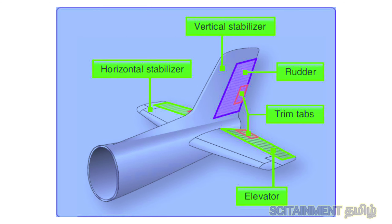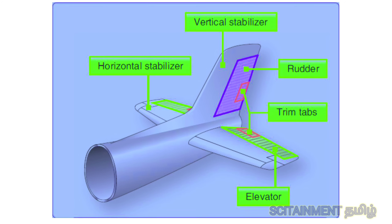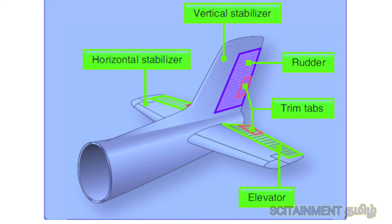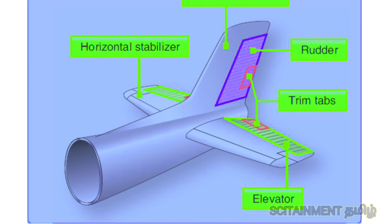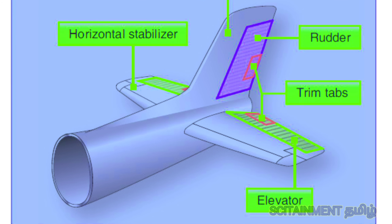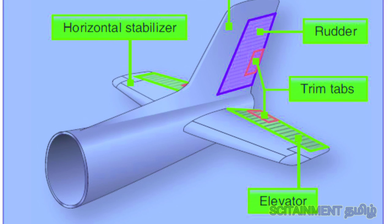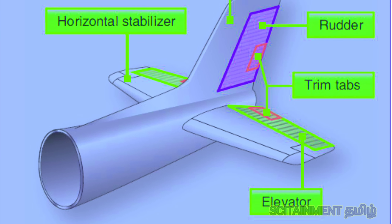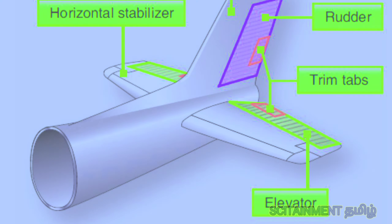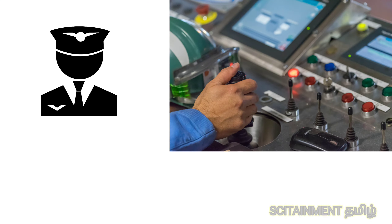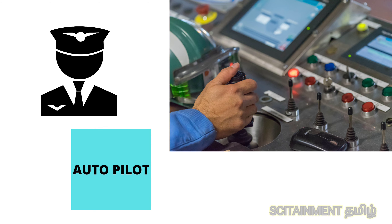If you look at the Elevator, the Elevator is a horizontal stabilizer. The tail is fixed in the horizontal stabilizer, and the outer control surface is fixed in the mirror. This controller supports both manual and autopilot operation.